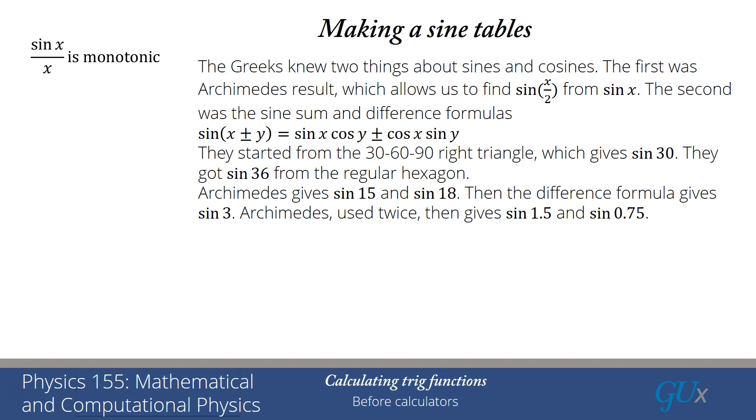And now they use the fact that sine x divided by x is monotonic. That means sine x over x, turns out, is actually a decreasing function of x. How do I see that? Well, the red line is x, and the green line is a sketch of what sine of x looks like.